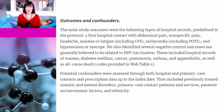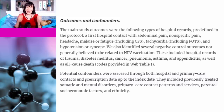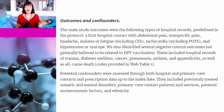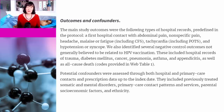The events they looked at were first hospital contact with abdominal pain, non-specific pain, headache, malaise or fatigue (including chronic fatigue syndrome), tachycardia (a rapid beating heart, including POTS), and hypotension or syncope (fainting). These were chosen because they were events that had been reported as adverse events following vaccination. They also looked at events that weren't reported following vaccination as a control.